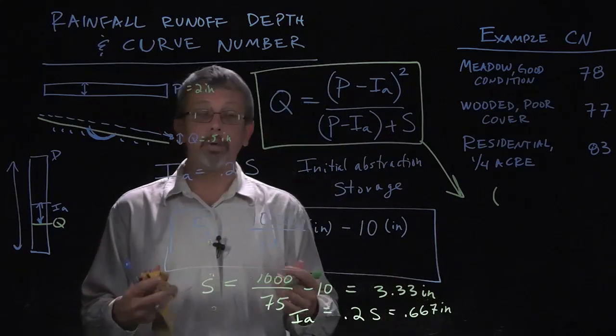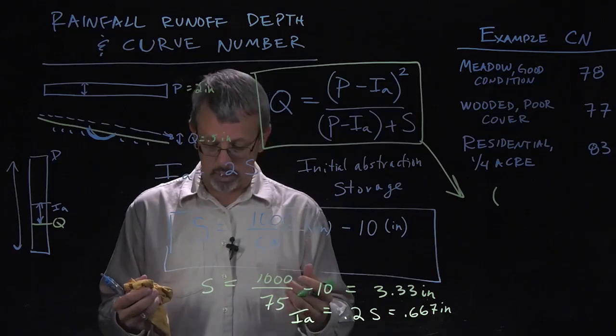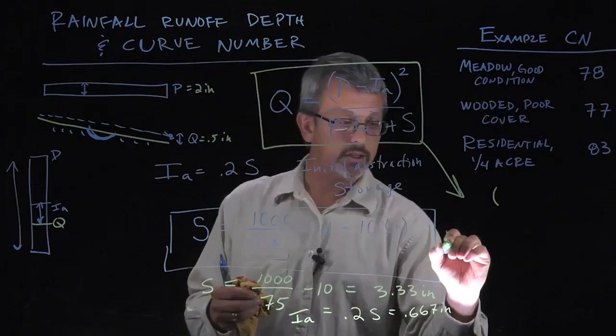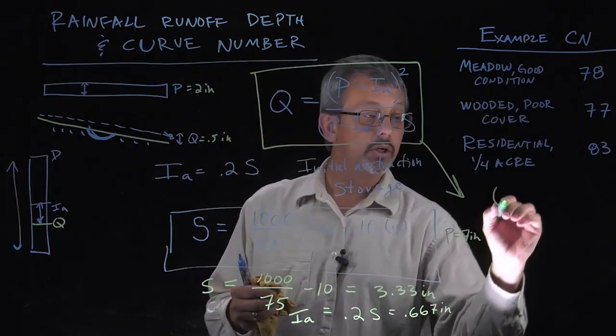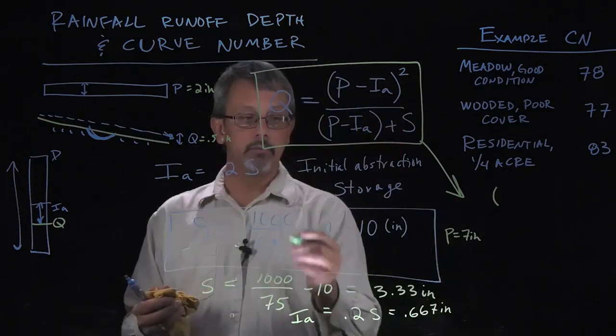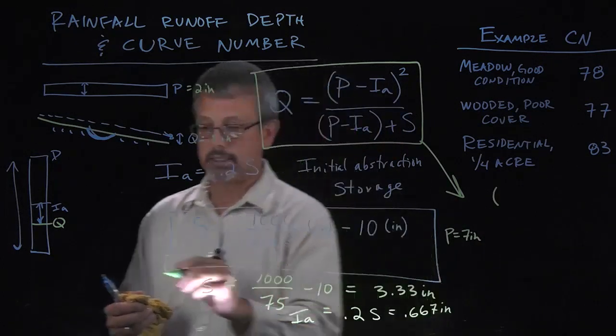We'd have to see what the initial precipitation was. Let's say, for example, we had seven inches of precipitation. So if I say P equals seven inches, seven inches of precipitation is greater than the 20%. I think I said that earlier.